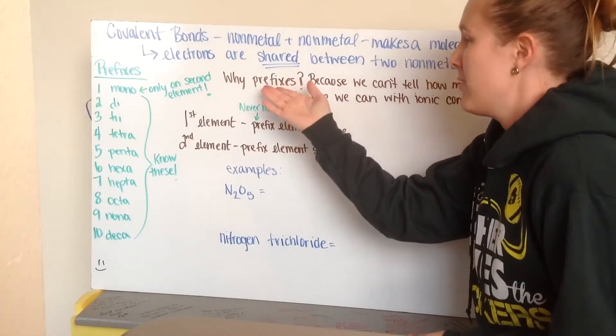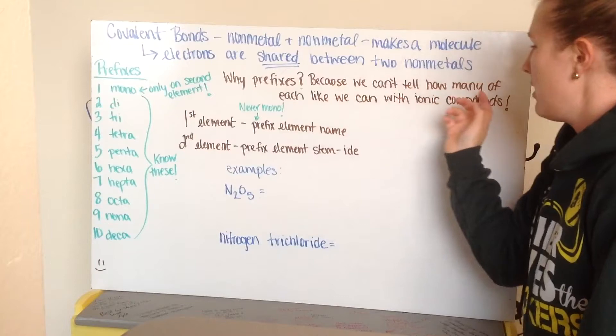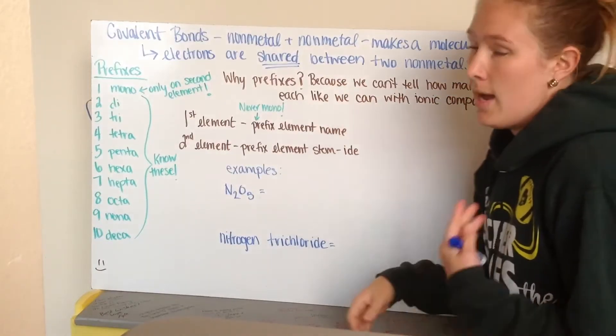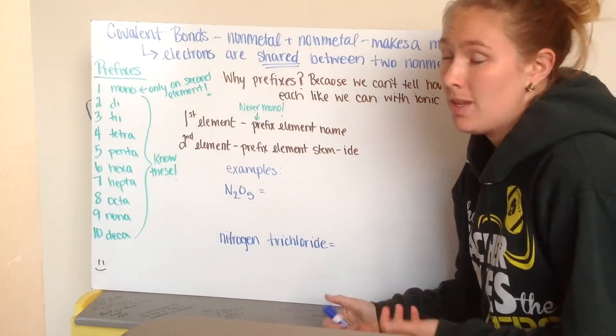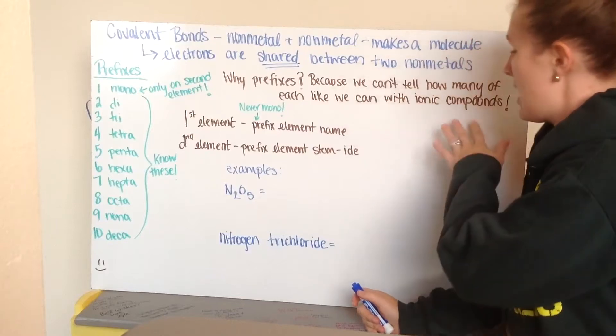Why do we need to incorporate prefixes? Well, because we can't tell how many of each element or each atom we have in our molecule like we can with ionic compounds.